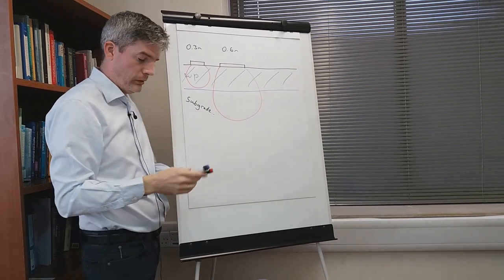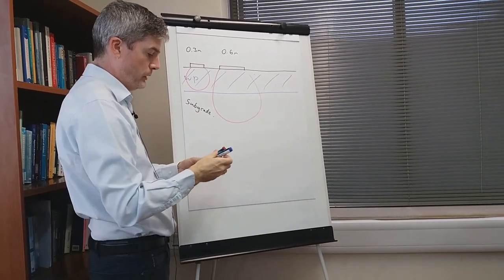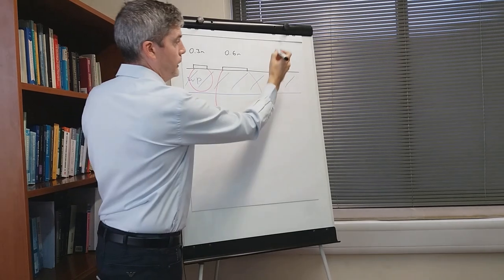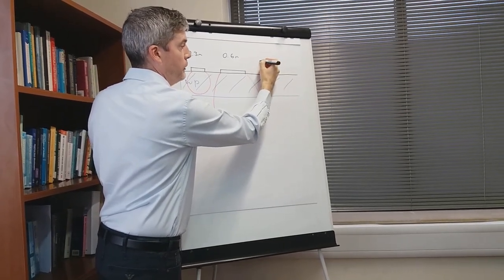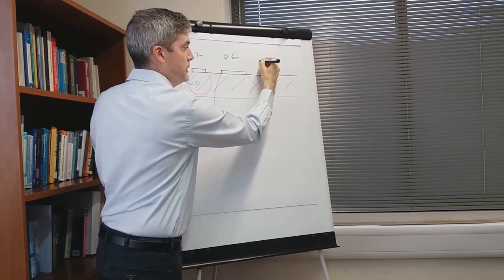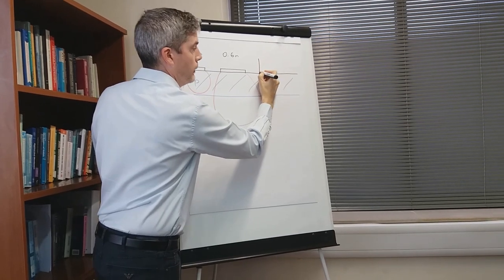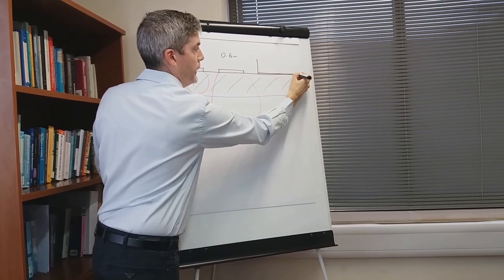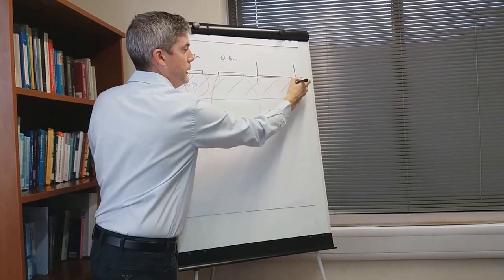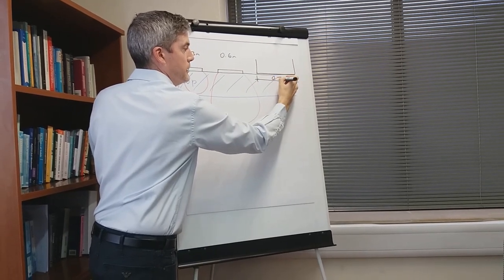That is important for working platforms because imagine we have plant, a piling rig for example, that is going to use this working platform and that has a track width say 0.7 meters.